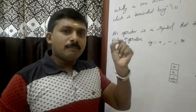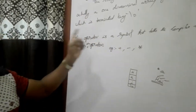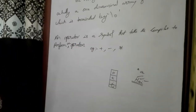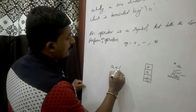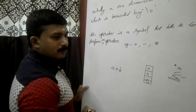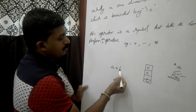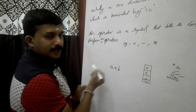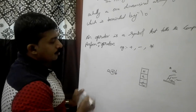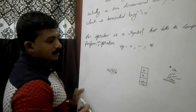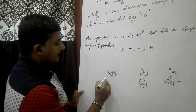An operator is a symbol that tells the compiler to perform an operation. For example, a plus b — here, the addition operation is performed.